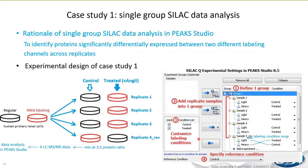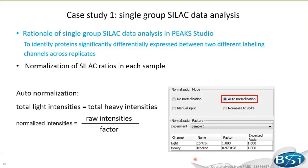According to this design, here is how the experimental settings are configured in PICS Studio 8.5. Two conditions are specified: control and treated. In samples one, two, and three, the light signal is from the control and the heavy signal from the treated, whereas in sample four the two conditions are swapped. The control condition is specified as the reference condition, so that SILAC ratios of treated relative to control are calculated for peptides and proteins.